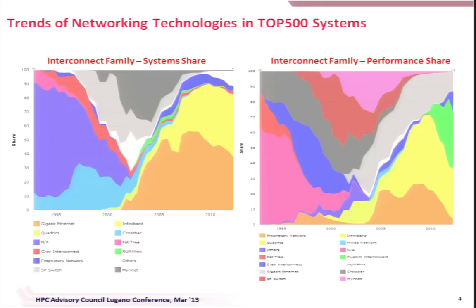If we look at the technology, especially networking technologies, many of you might have seen the Top 500 charts. These show how networking technology has evolved over the years — the interconnect families and the number of systems. Out of 500 systems in 2005, how many were Ethernet, how many were InfiniBand, how many were crossbar — those kinds of numbers. The right-hand side shows the accumulated performance of those machines.